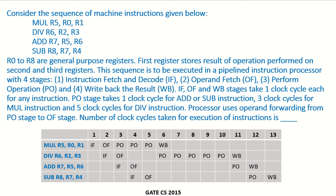Consider the sequence of machine instructions: a multiplication, a division, an addition, and a subtraction instruction. R0 to R8 are general purpose registers. The first register shows the result of the operation performed on the second and third registers. So the first operand is the destination register and the other two are the source operands — this is the case in each and every instruction.